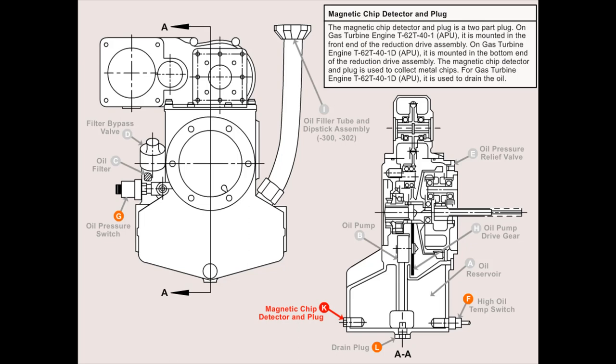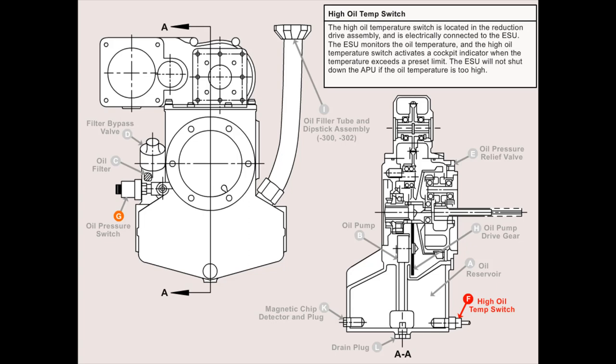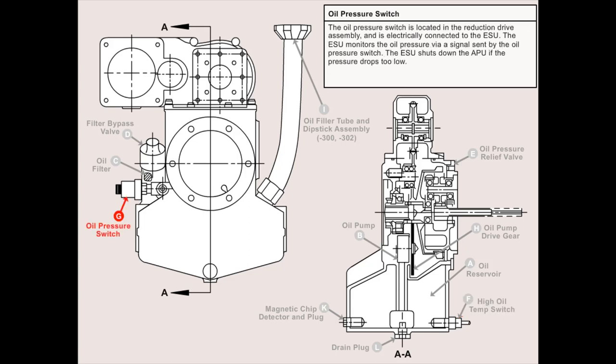On gas turbine engines T62-T41-D, the magnetic chip detector is mounted in the bottom end of the reduction drive assembly and is used to collect metal chips and drain the oil. On gas turbine engine T62-T40-1, the drain plug is located at the bottom of the reduction drive assembly and is used to drain the oil. The high oil temp switch is located in the reduction drive assembly, electrically connected to the ESU, which monitors oil temperature and activates a cockpit indicator when temperature exceeds a preset limit. The ESU will not shut down the APU if oil temperature is too high. The oil pressure switch is located in the reduction drive assembly and is electrically connected to the ESU, which monitors oil pressure; the ESU shuts down the APU if pressure drops too low.